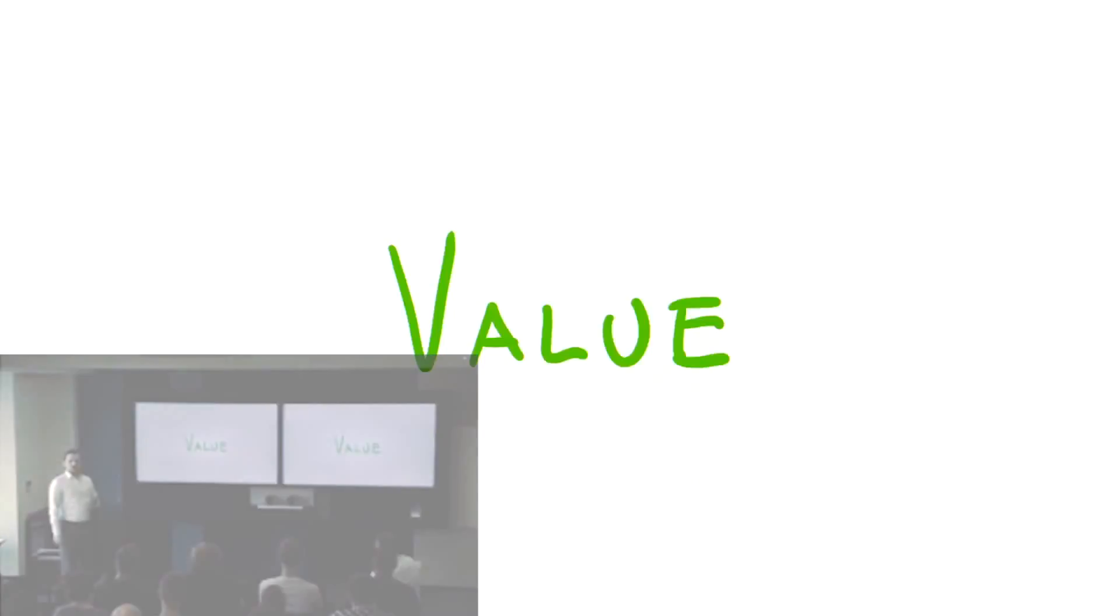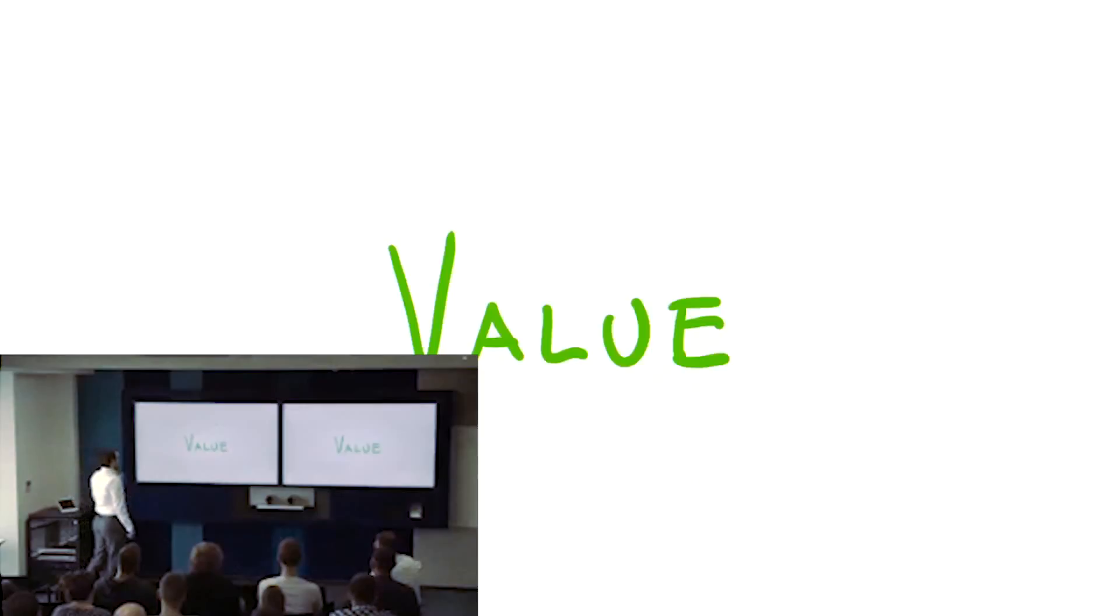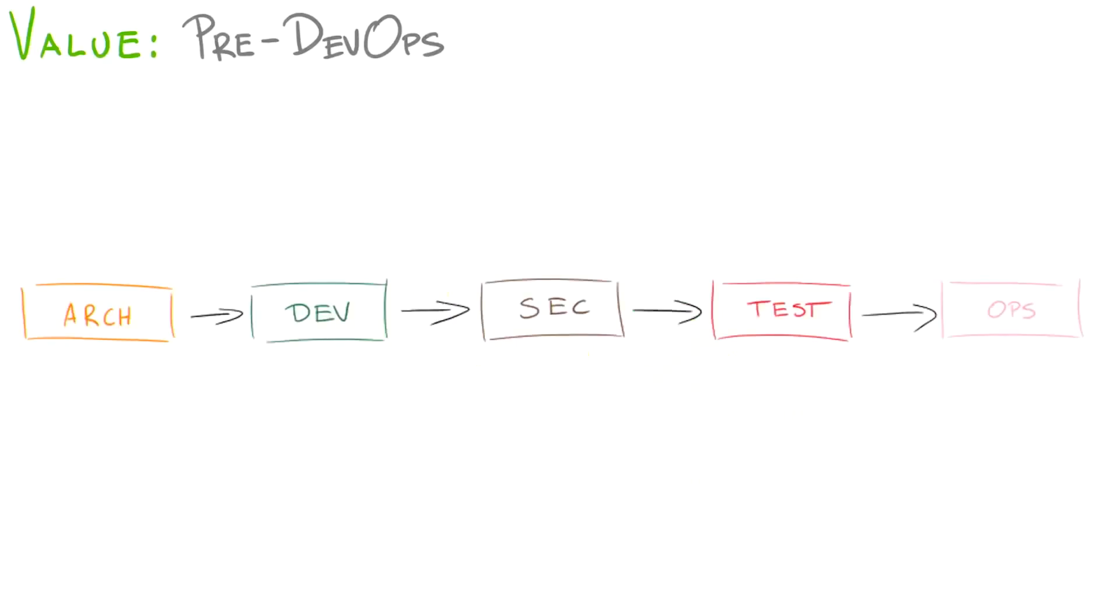When you think about this, everything that you do at work should basically generate value. The value for other team, value for the company, value for the customer. From customer perspective, if you divide this value generation process into bits, you get something called a value stream or value chain. This is how it looked before DevOps happened. This is the old-school value stream.